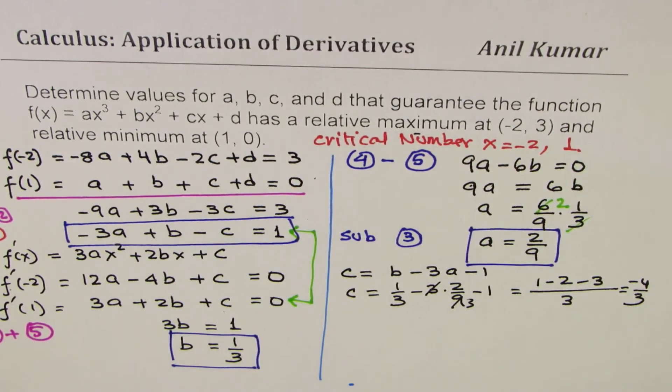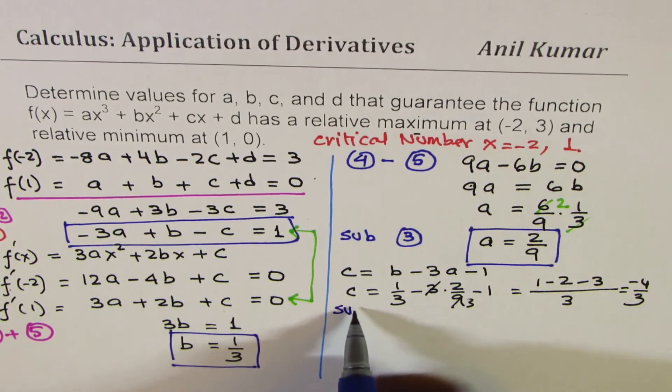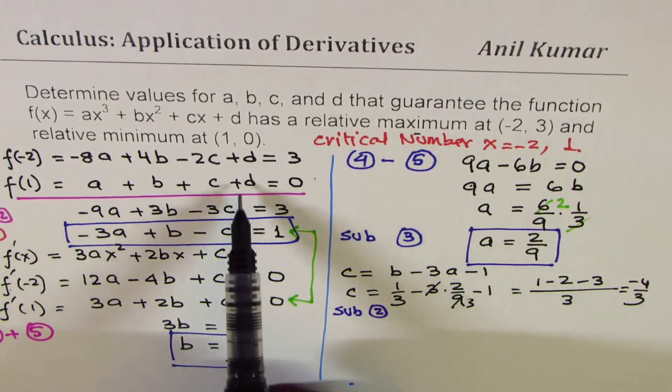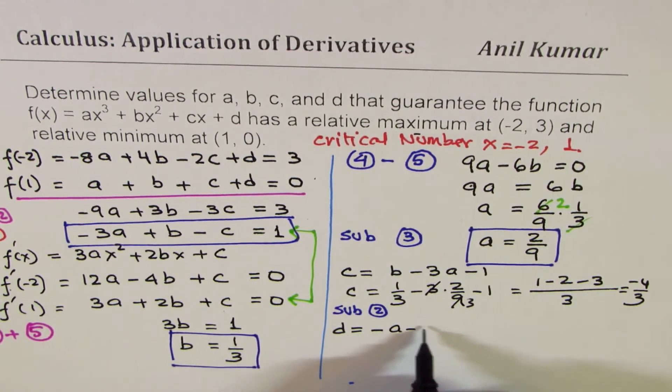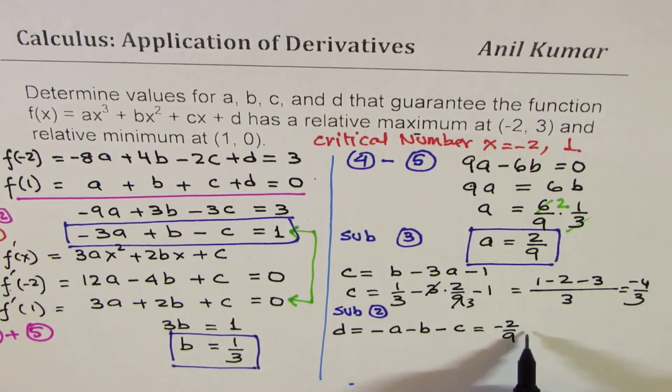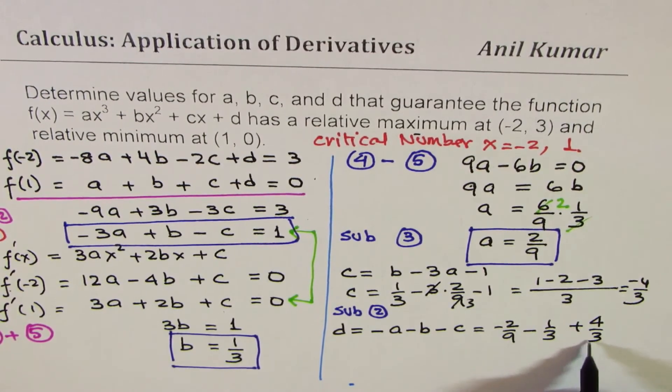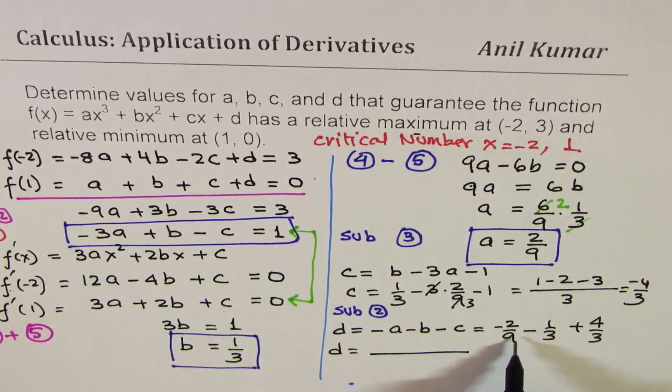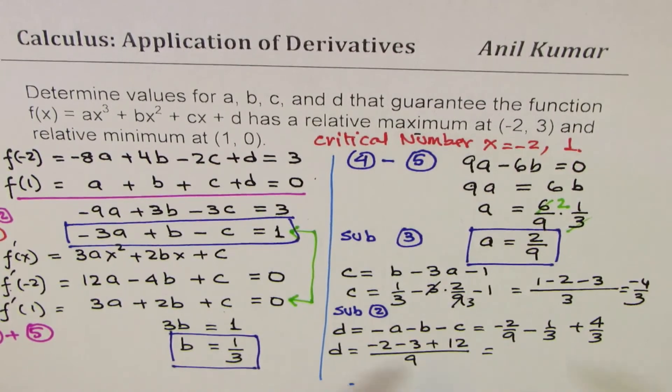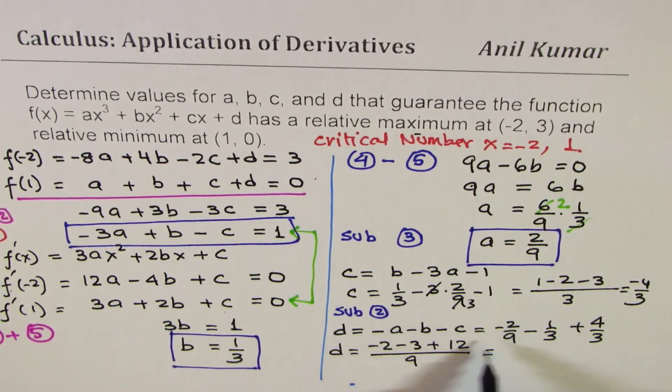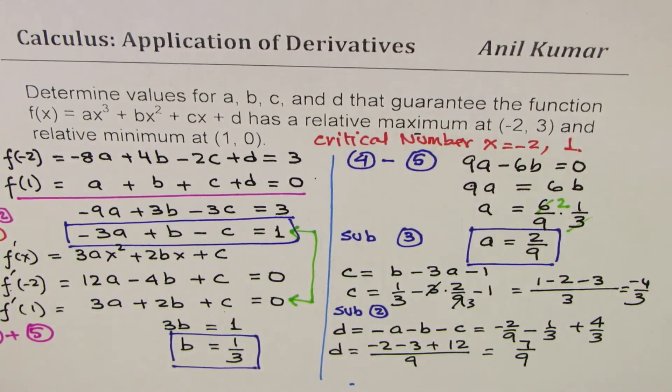Now we can find what d is. So we'll substitute this in equation 2. So d = -a - b - c, which is -2/9 - 1/3 + 4/3. So d is common denominator of 9 will give us -2 - 3 + 12. So that is 10 minus this which is 7. 7/9. So we get d = 7/9. Perfect.